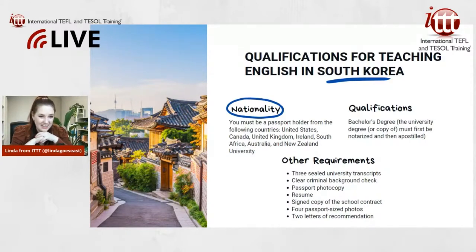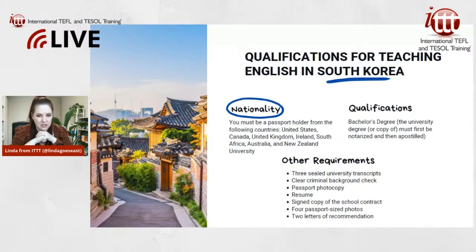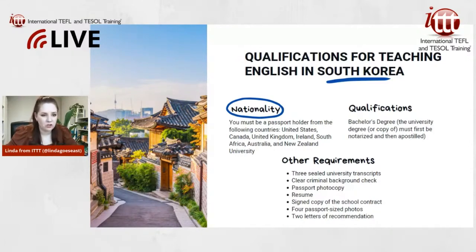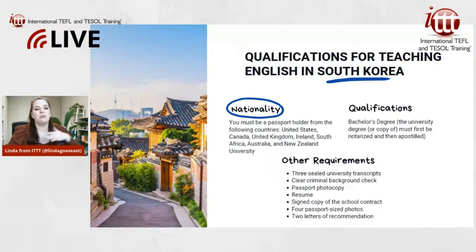You also need a passport photocopy, a resume, a signed copy of the school contract, four passport-sized photos, and two letters of recommendation — though now that I think about it, I'm not sure if the letters of recommendation are still required. That's the general list of documents you need in order to get your visa.